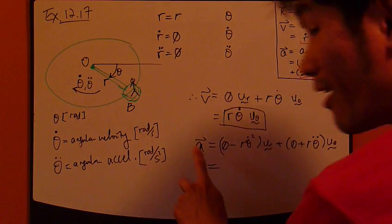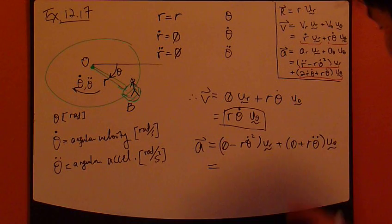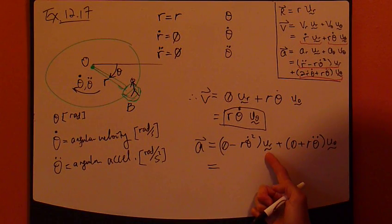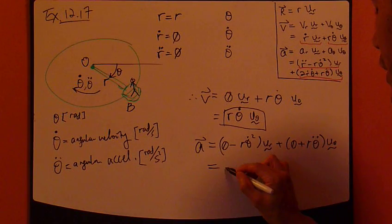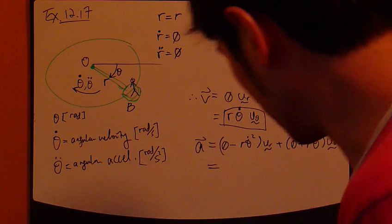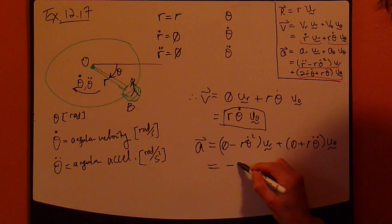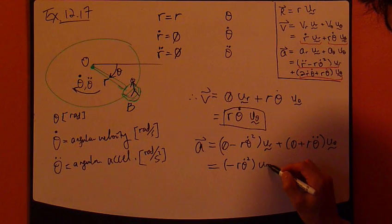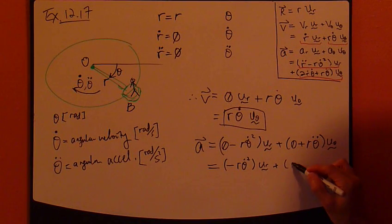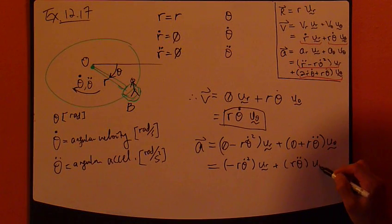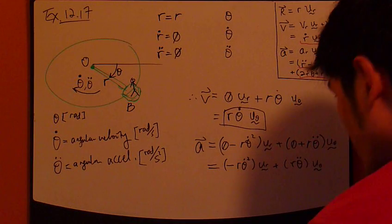Look at that. Hey, acceleration now. Both directions survive. You have both r direction and theta direction. So, turns out, negative r theta dot square, u_r, plus r theta double dot, u_theta. That's the result.